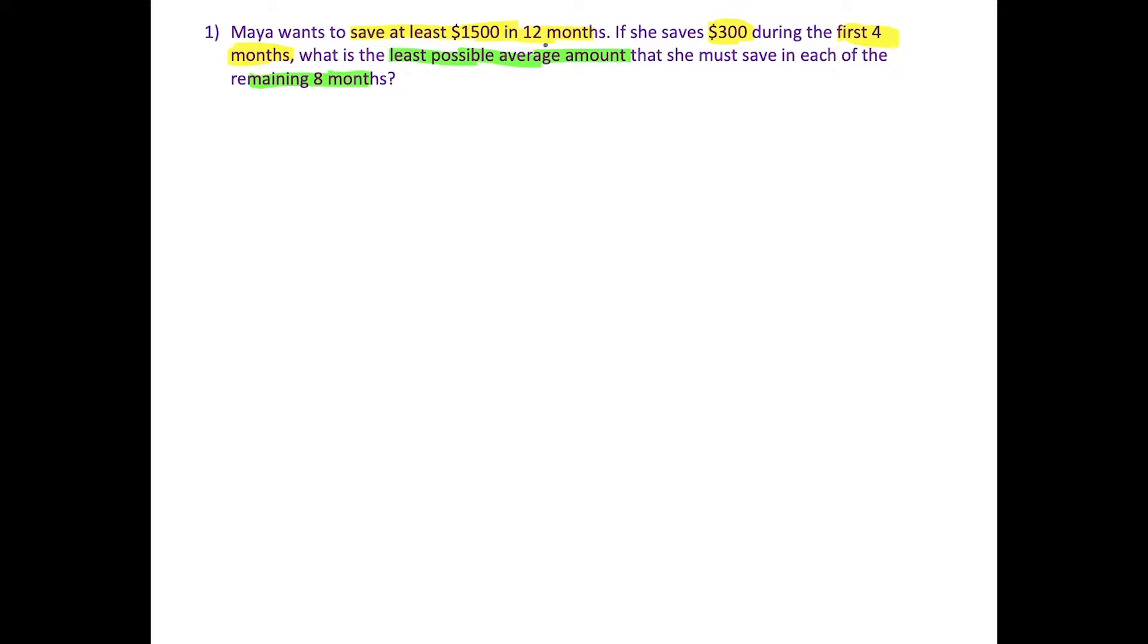There's just a few things we have to think about carefully here. This phrase at least $1,500. We have to interpret this in the context of an inequality. When you hear the phrase at least, if Maya wants to save at least $1,500, then she either wants to save exactly $1,500 or more than that. So the amount that she has to save, we're going to write an expression over here on the left, but that amount has to be greater than or equal to $1,500.